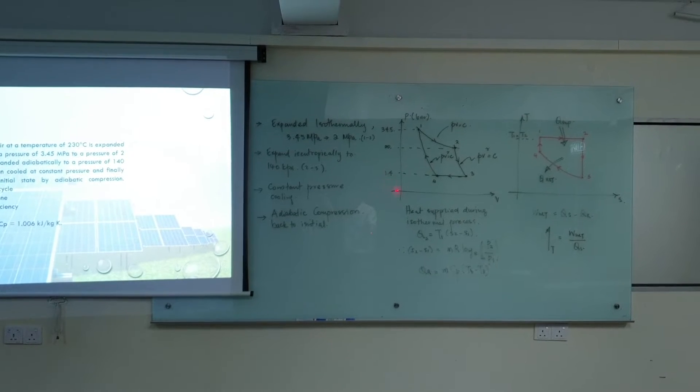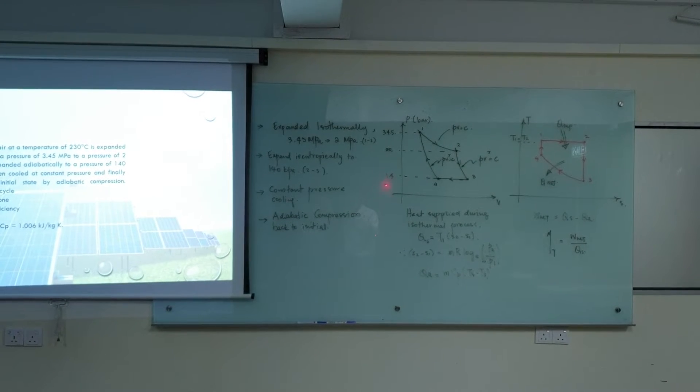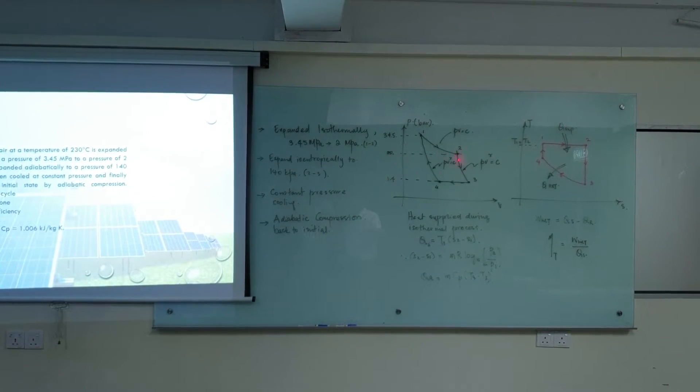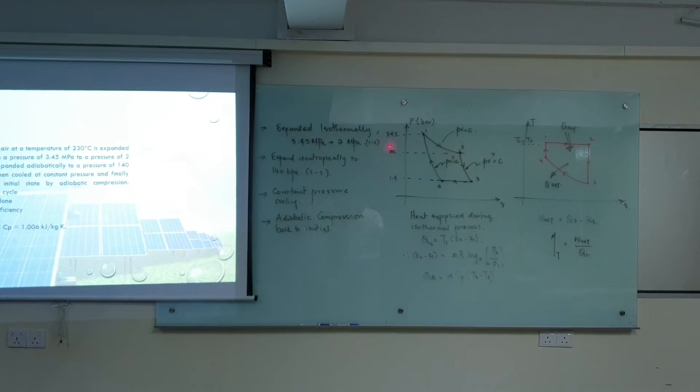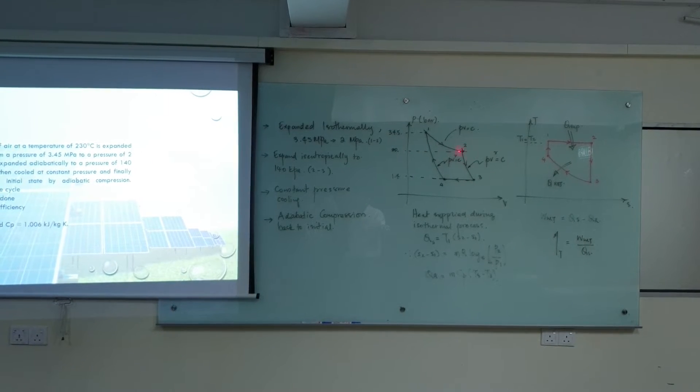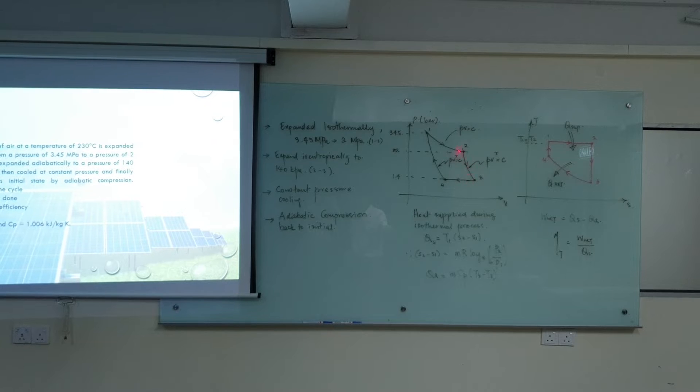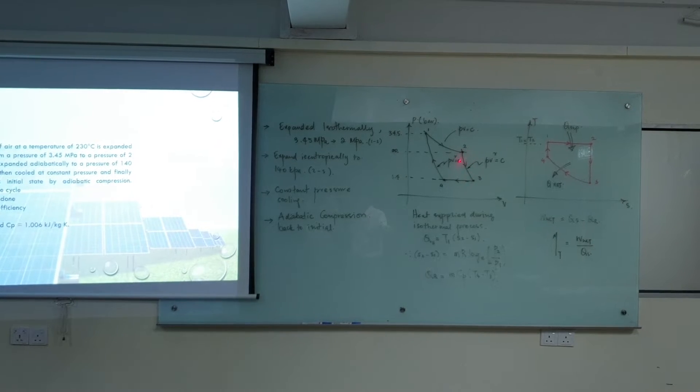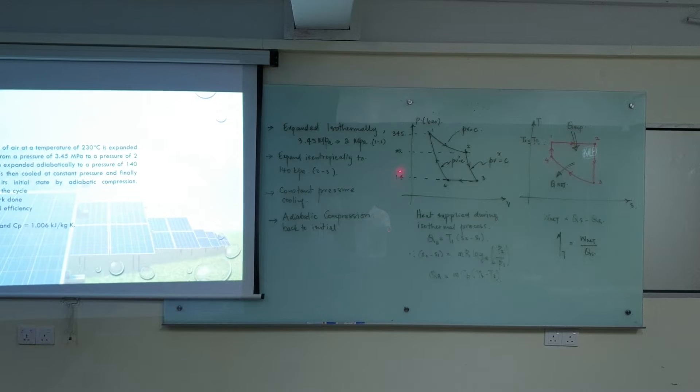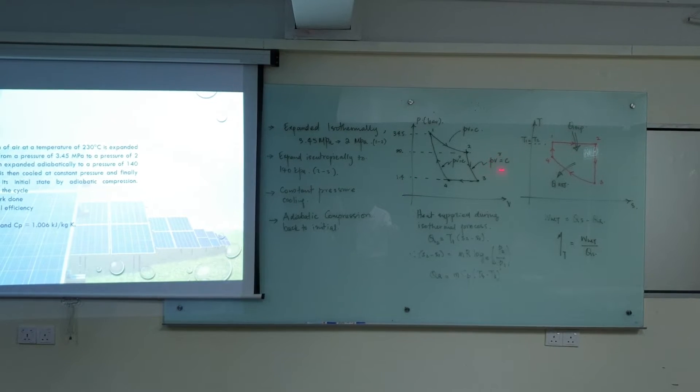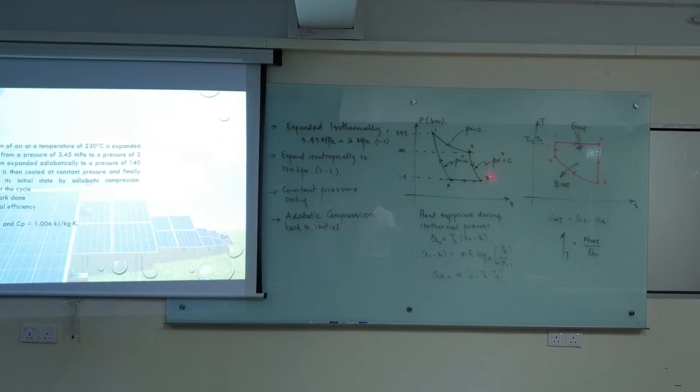So it's 1.4 MPa. From 20 bar, the system undergoes an isentropic expansion process further down to 1.4 bar actually. So it follows the law of PV to the power of gamma equals to C.